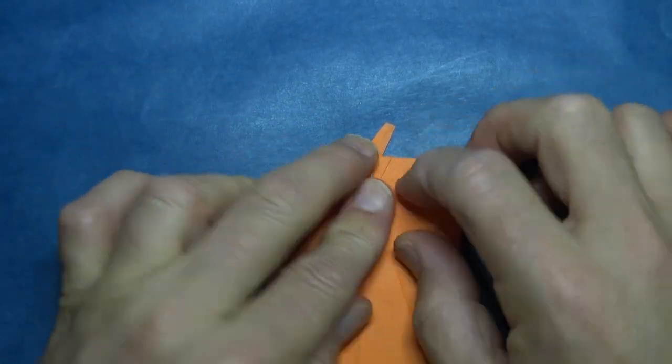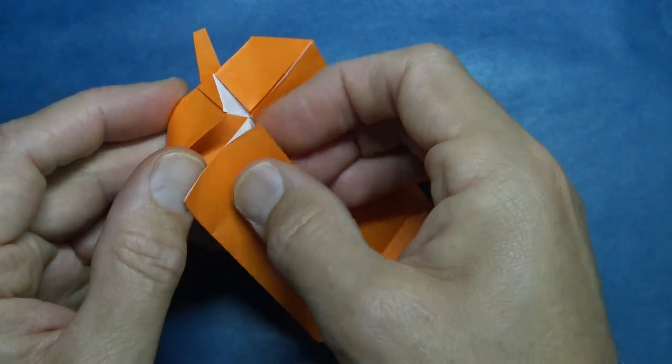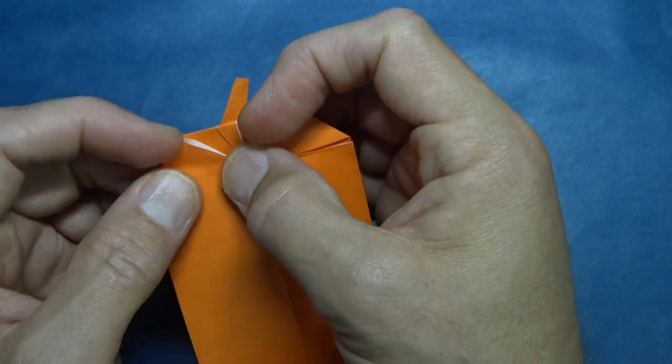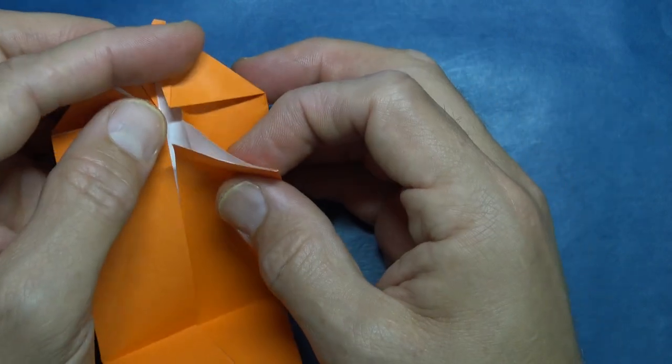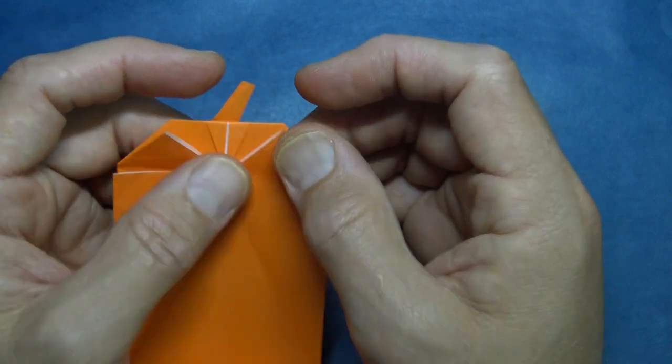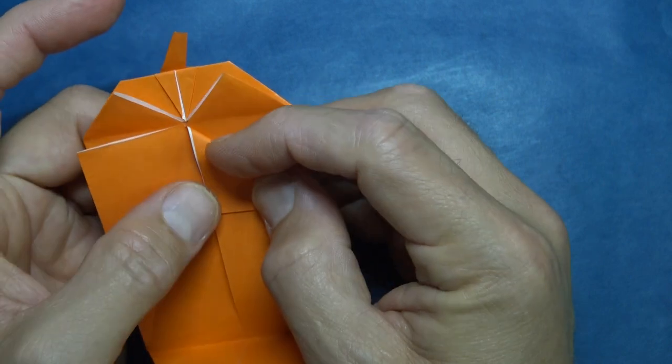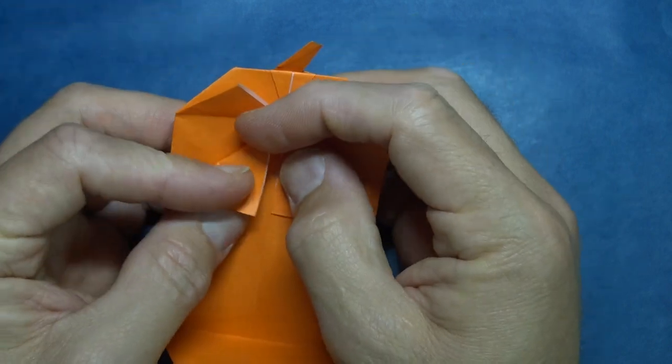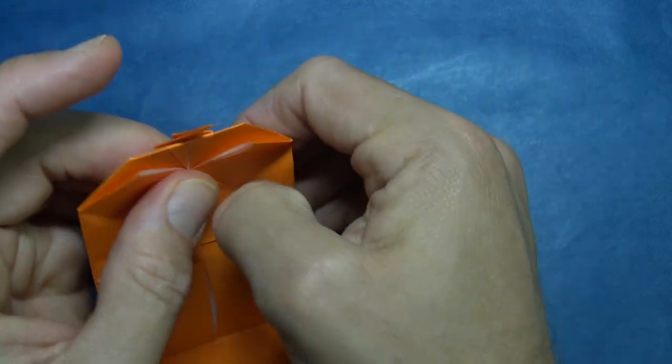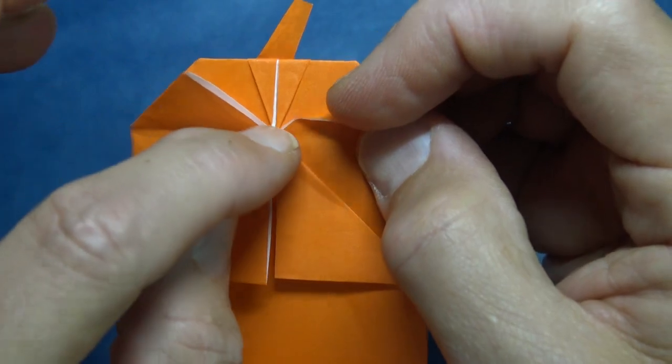So pumpkin stem done. Now we're going to unfold this flap and reach in and pull this flap out and put it on top. Like that. And repeat. So pull the flap out and put it on top. These are the eyes. Let's get these flaps out of the way, so fold down. And now fold this flap.